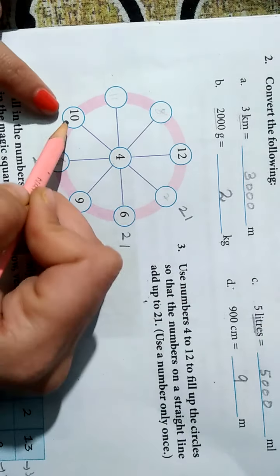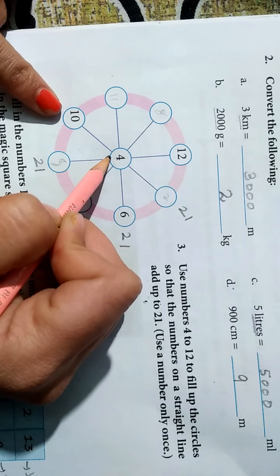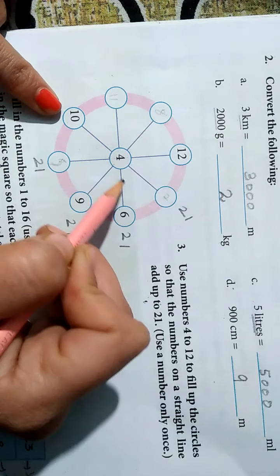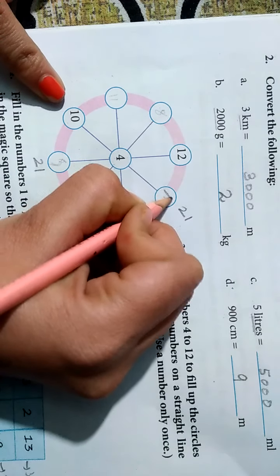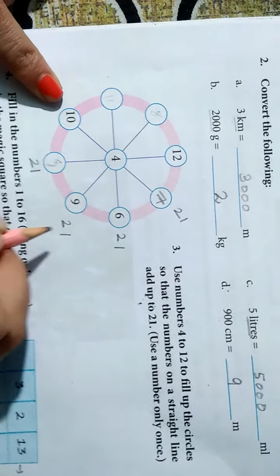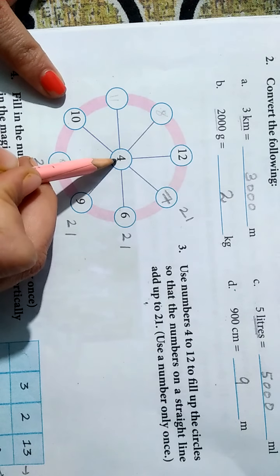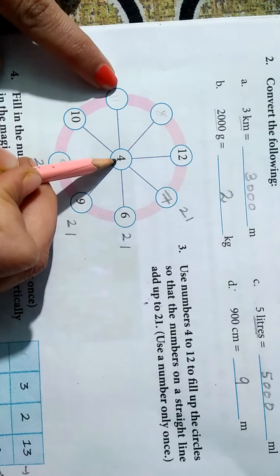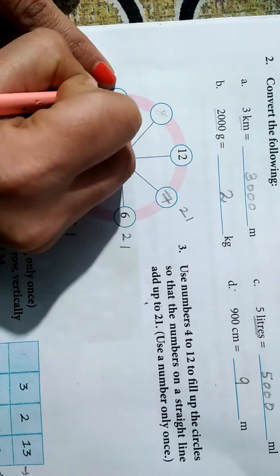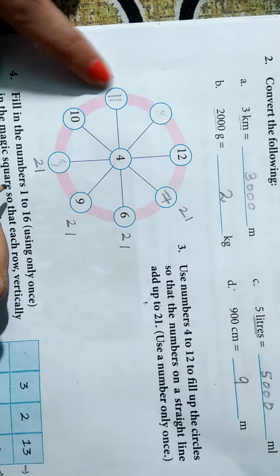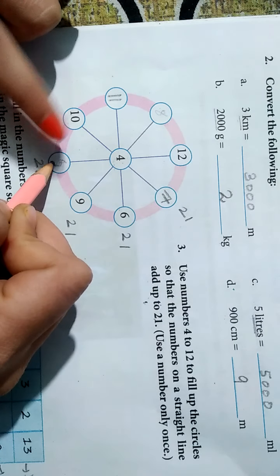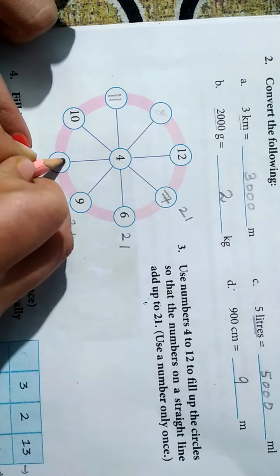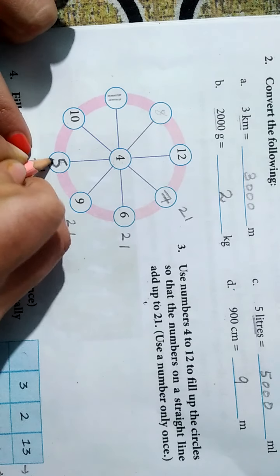Aap dekhe. Hamare paas 10 plus 4 kitna? 14. Mujhe kitna chahiye? 21. To 14 me kitna add karoge? 7. Correct? Aap 4 plus 6 is 10. Mujhe 10 me kitna add karoge tab 21 aana chahiye? 11. Correct? 4 plus 12 plus 4 is 16. 16 me kitna add karoge? That is 5. Correct? Aap 9 plus 4 is 11. 11 me kitna add karoge tab bhi 21 aana chahiye.